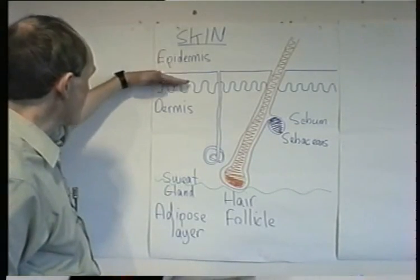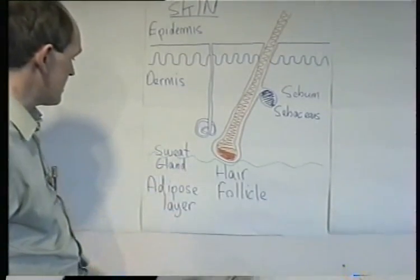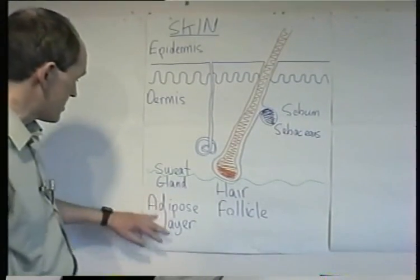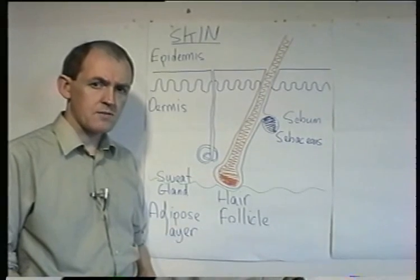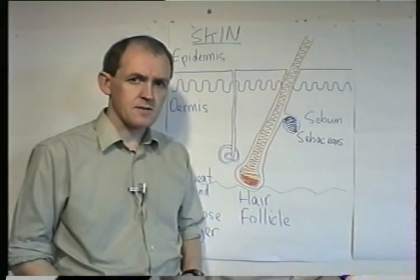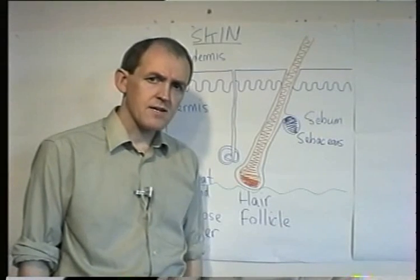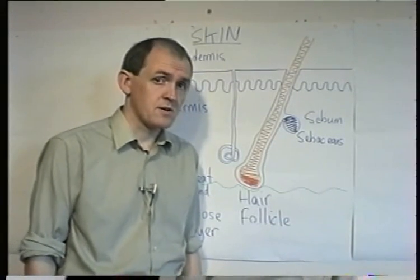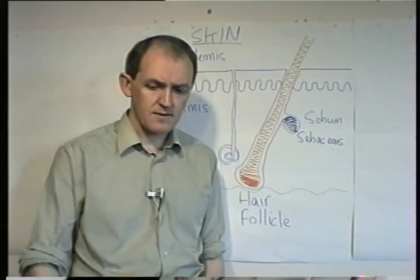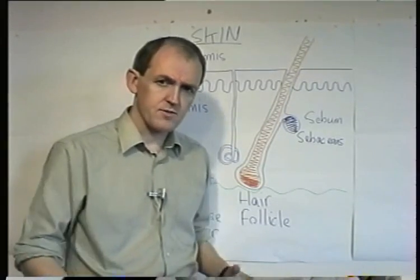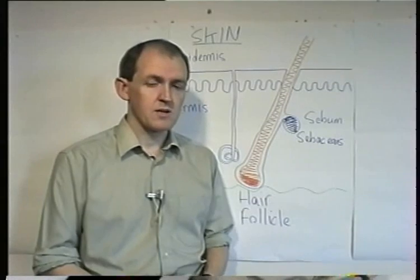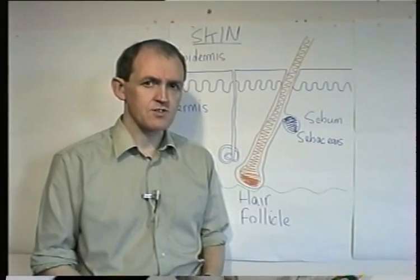So here we have the skin: we've got the epidermis, we've got the dermis, and we've got the subcutaneous tissue which is usually adipose tissue. The layer of adipose tissue tends to be thicker in females than in males. Females tend to store their adipose tissue subcutaneously all over the surface of the body, whereas males tend to store most of their adipose tissue in the abdomen. So male obesity very often presents as abdominal obesity, because of the nature of fat storage distribution.